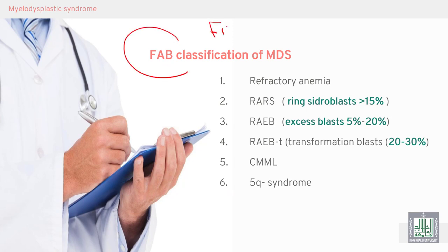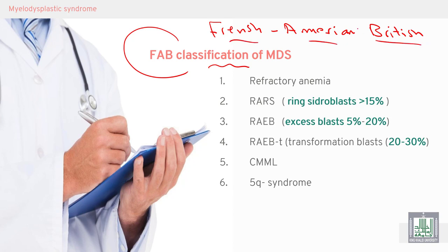FAB stands for French-American-British classification. In the 1970s, French, American, and British scientists met together and classified leukemia and MDS into subtypes. They classified MDS into refractory anemia, or refractory anemia with ringed sideroblasts.